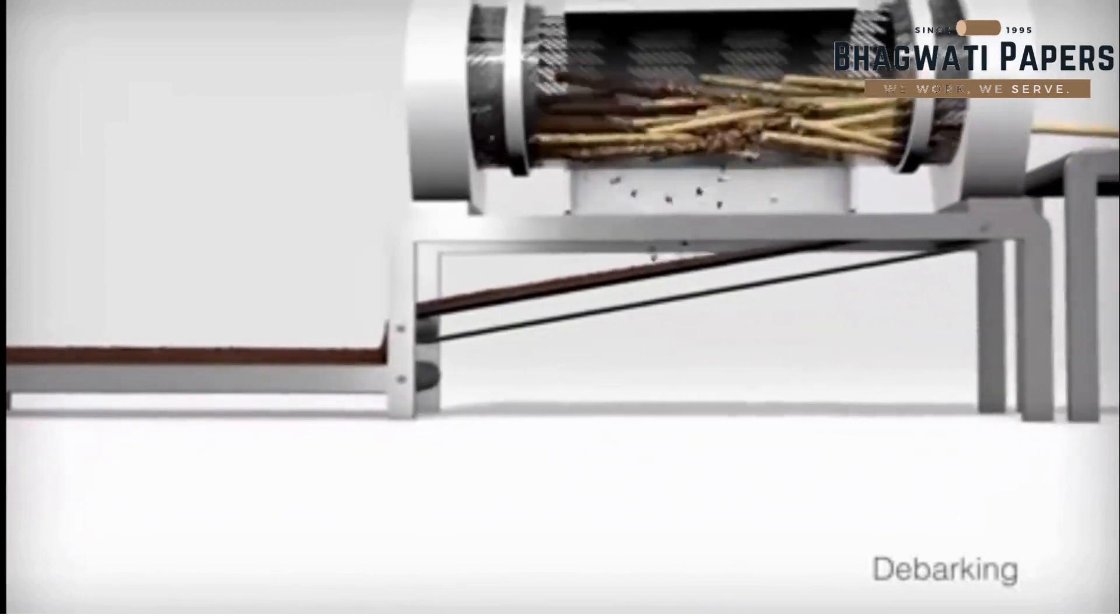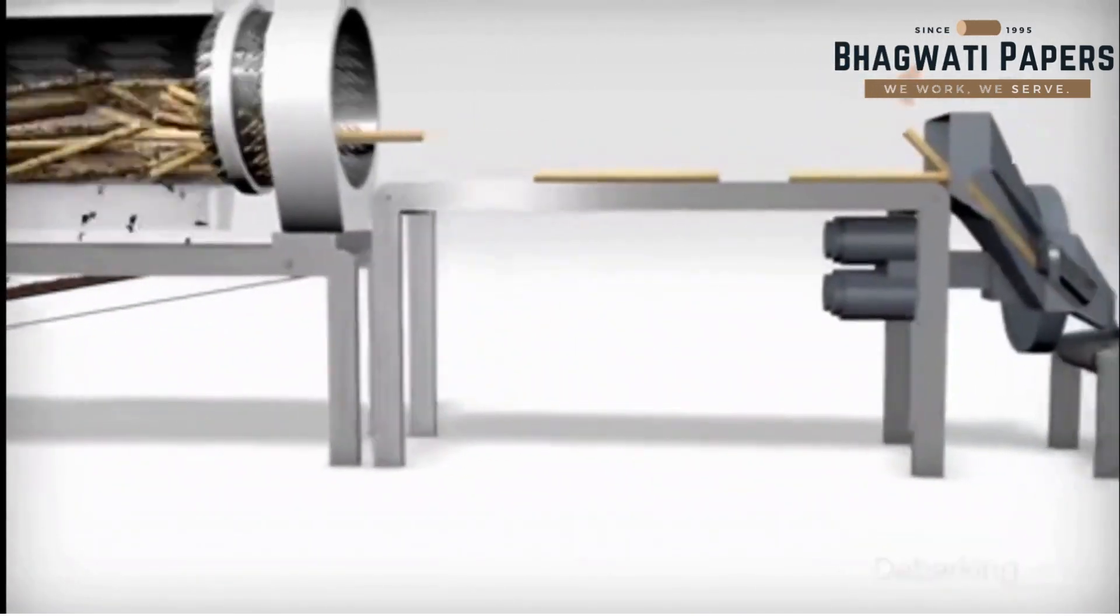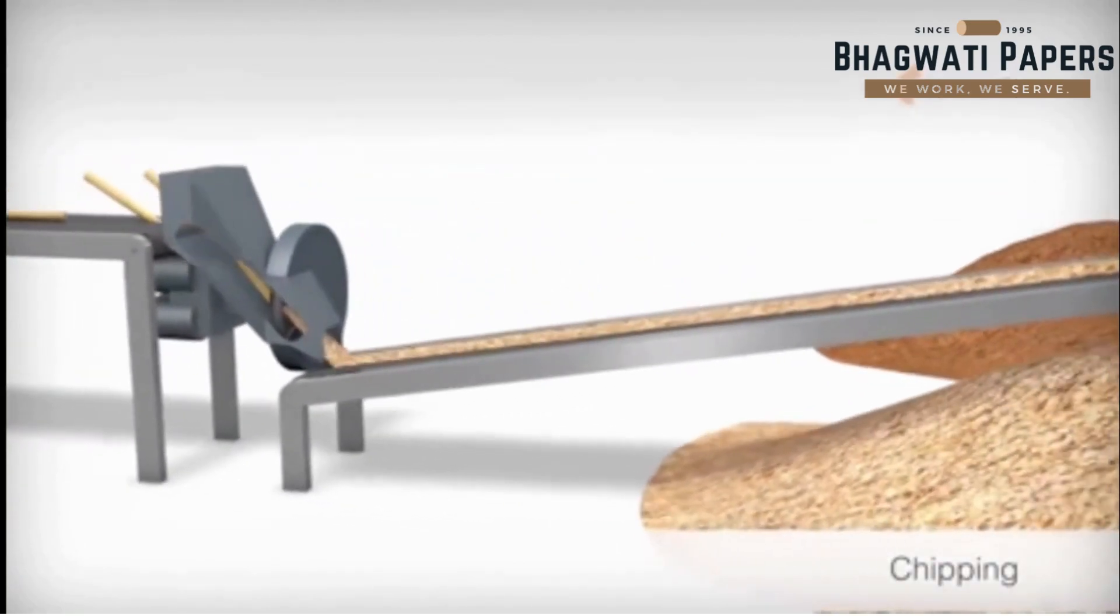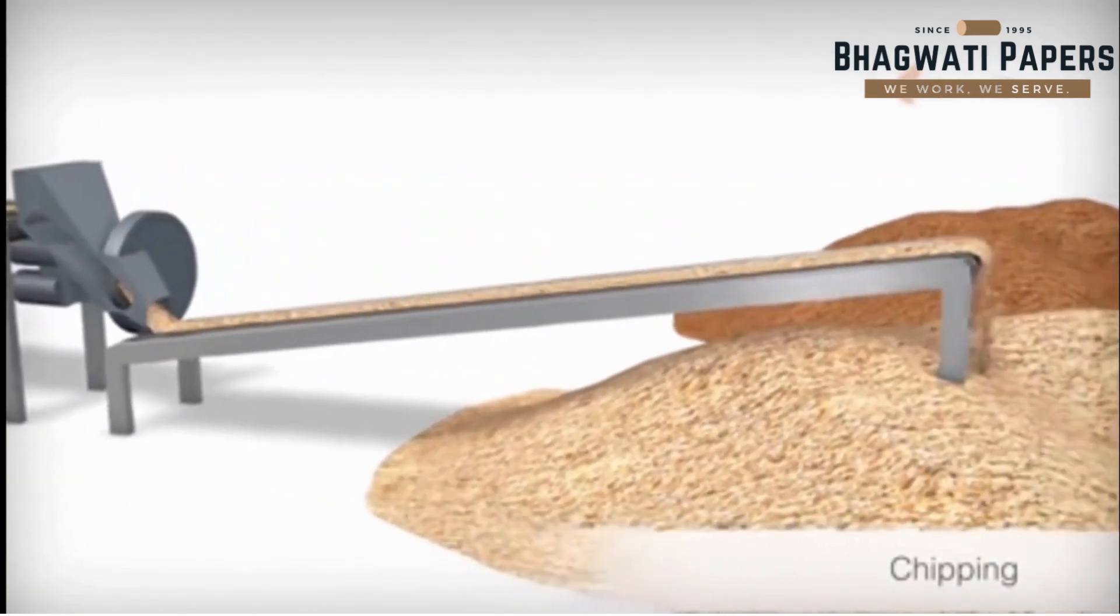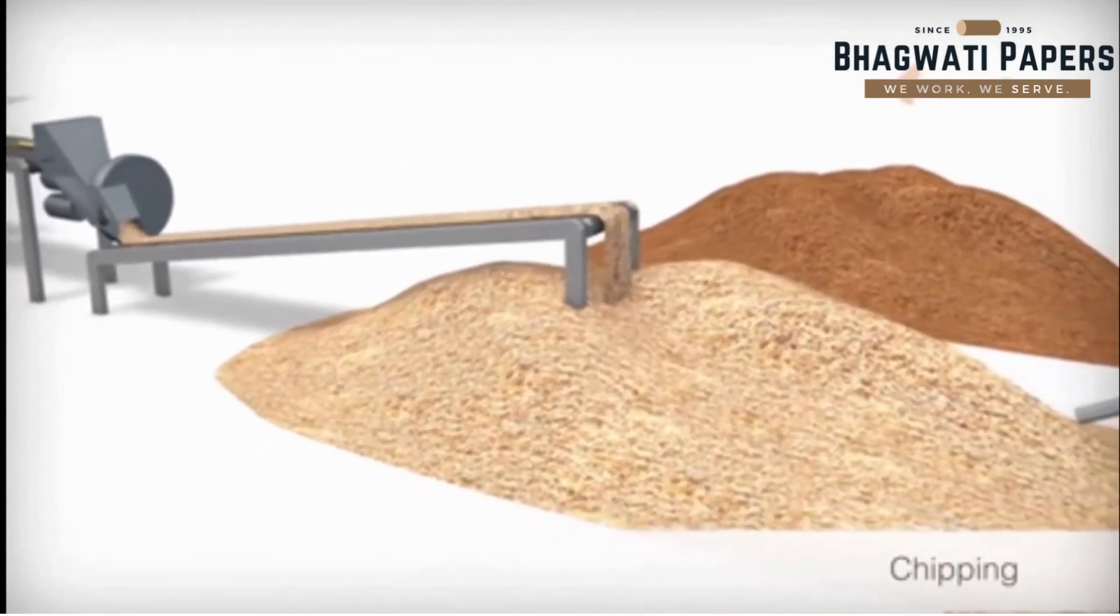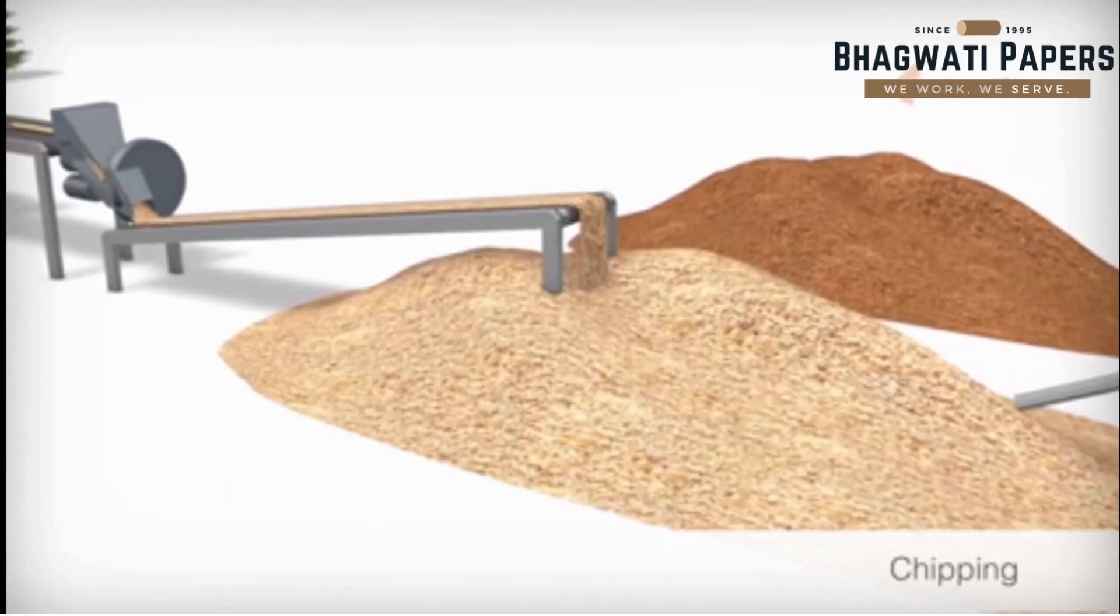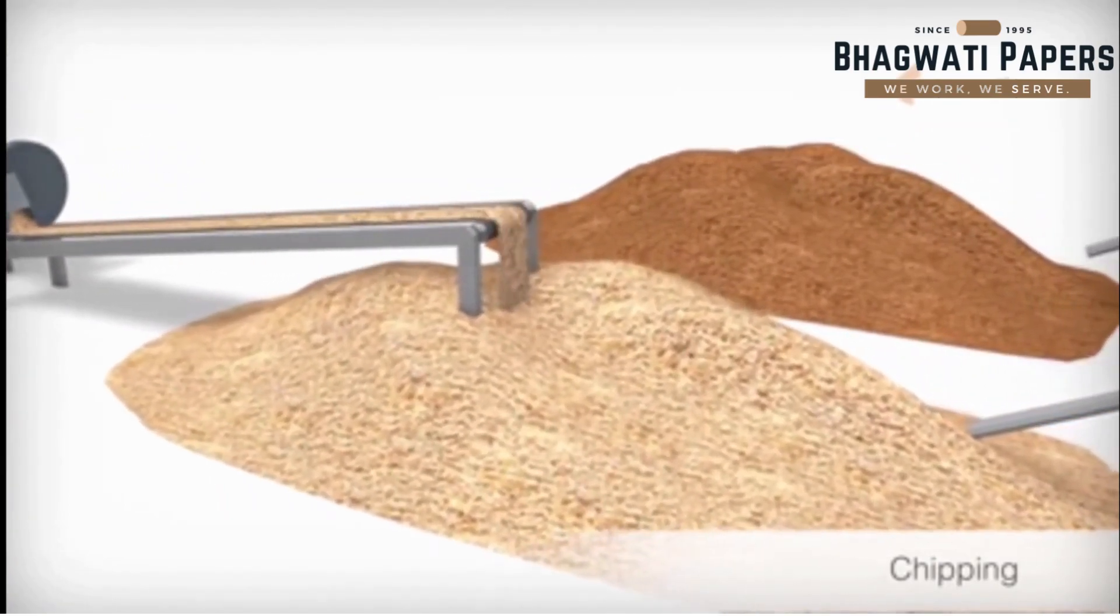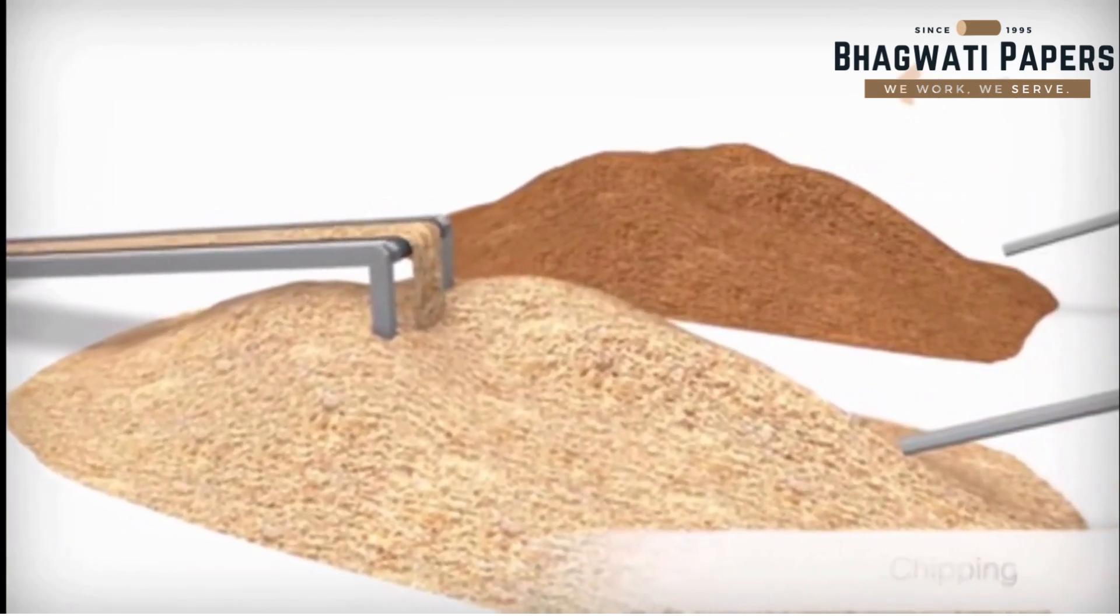The debarked logs leave the debarking drum and are transported to the chipper for cutting. Since uniform chip size is important for achieving consistent pulp quality, the chips undergo thickness screening before storage. High quality pulp is produced from a carefully blended mixture of forest thinning and sawmill chips.